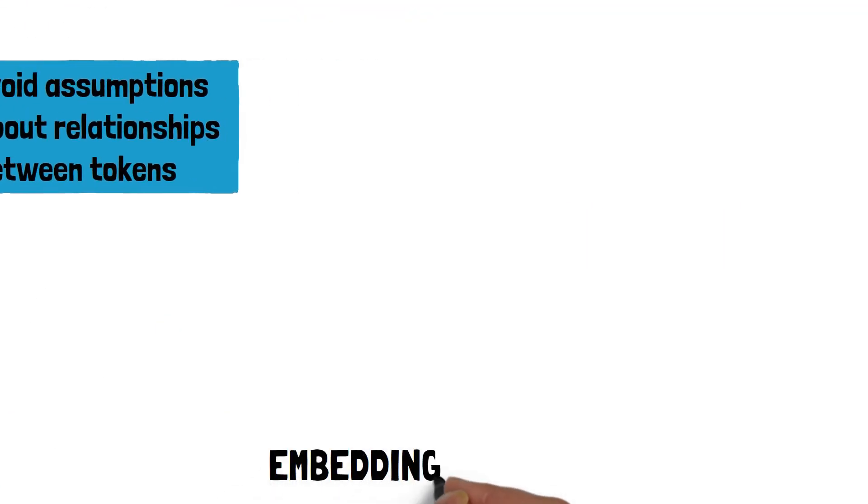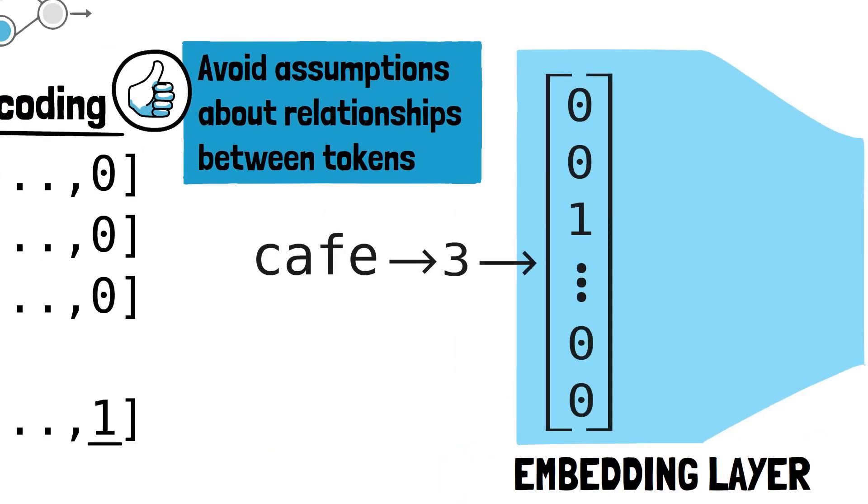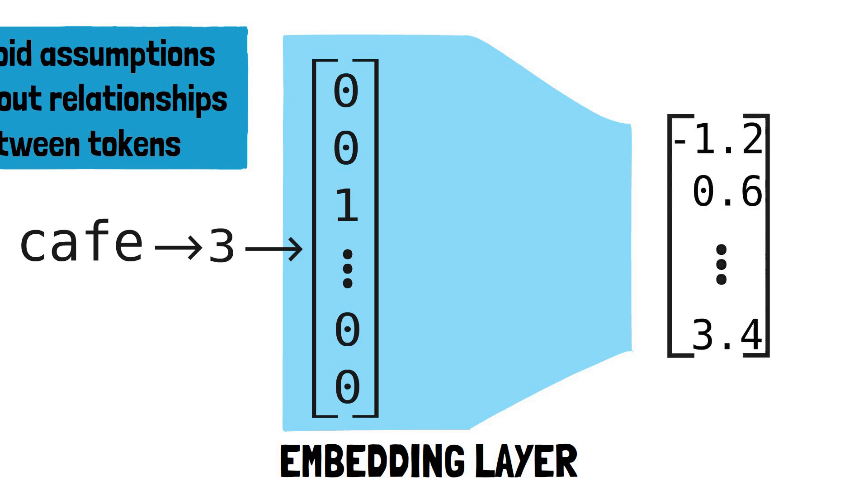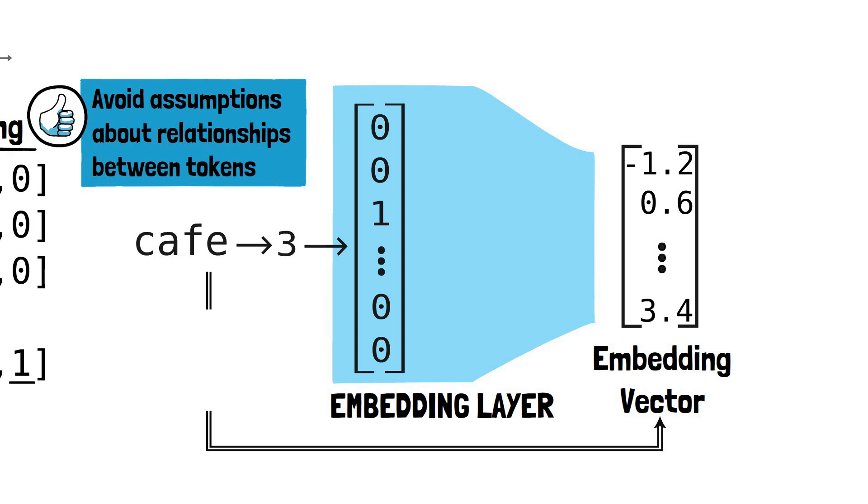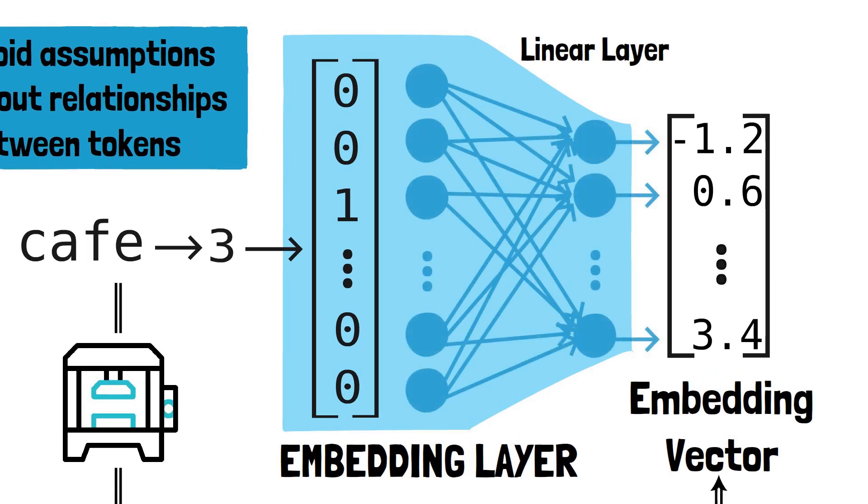To solve this dimensionality issue, we use embeddings. An embedding layer simply projects the one-hot encoded tokens into a vector with fewer dimensions. These new embeddings are like more dense versions of tokens. In practical terms, the embedding layer is just another linear layer with a weight matrix. It is one of the parameters the model will learn to optimize during training.